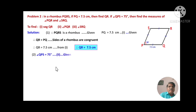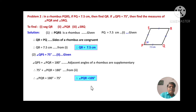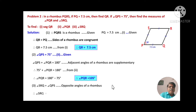Now, angle QPS is 75 degrees — given. Angle QPS plus angle PQR equals 180 degrees, since adjacent angles of a rhombus are supplementary. Therefore 75 plus angle PQR equals 180, so angle PQR equals 180 minus 75, which is 105 degrees. Third, angle SRQ equals angle QPS, as these are opposite angles. Opposite angles of a rhombus are congruent. Therefore angle SRQ equals 75 degrees, since QPS is given as 75 degrees.